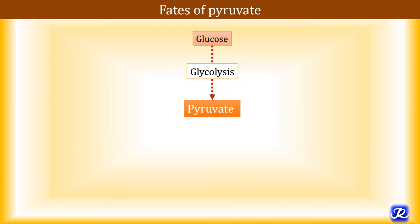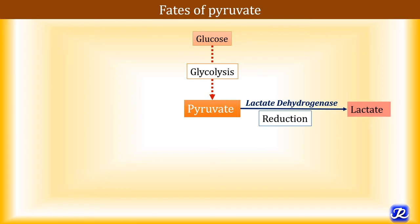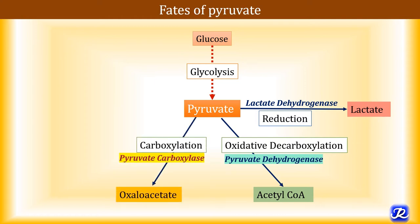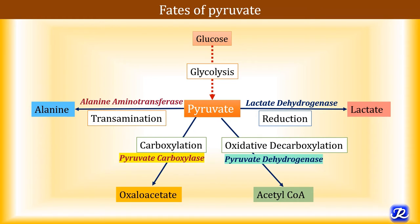In the previous videos on glycolysis, we studied that pyruvate is the end product of aerobic glycolysis. The different fates of pyruvate are: it can be reduced to lactate by lactate dehydrogenase in anaerobic glycolysis; it can be oxidatively decarboxylated to acetyl-CoA by pyruvate dehydrogenase; or it can undergo carboxylation to form oxaloacetate by pyruvate carboxylase.